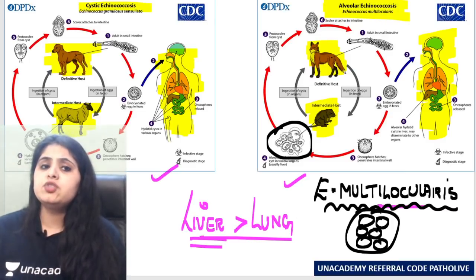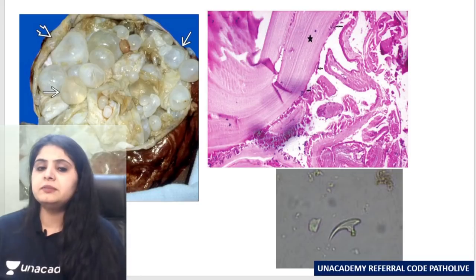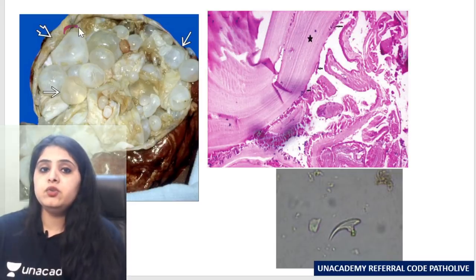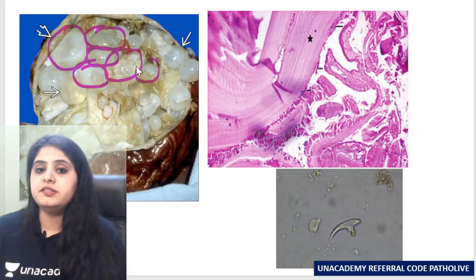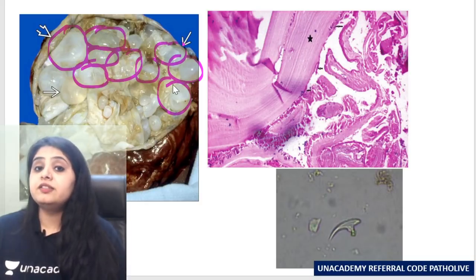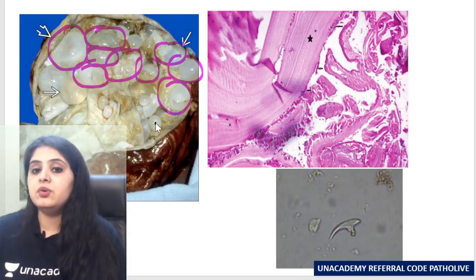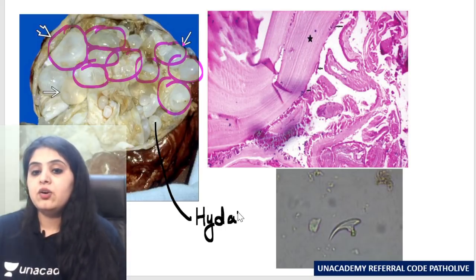Multilocularis is called alveolar only because the cyst has multiple locules. This is how the cyst looks — pearly white cystic structures. This is how a hydatid cyst looks: a single cyst with pearly white appearance — that is Echinococcus granulosis.